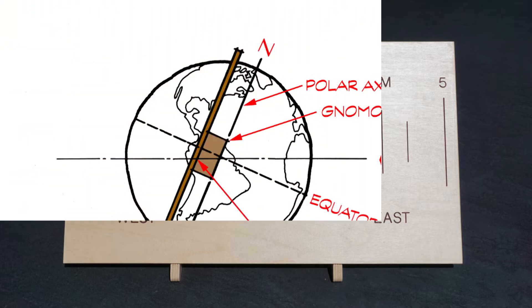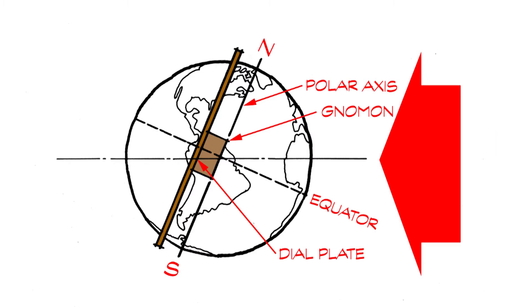It is called a polar dial because the shadow casting device, the gnomon, represents the Earth's polar axis. The shadow is cast across the dial plate that is parallel to that axis.